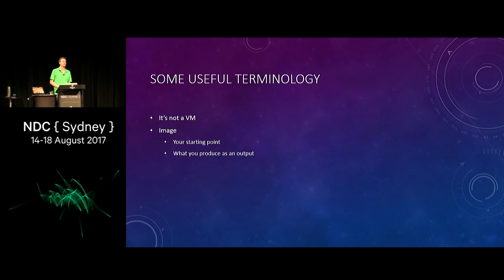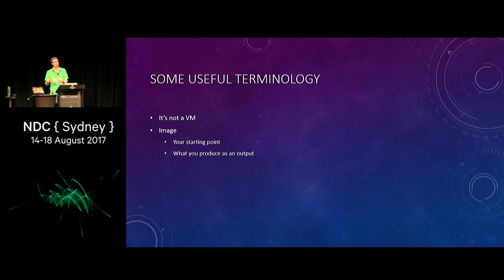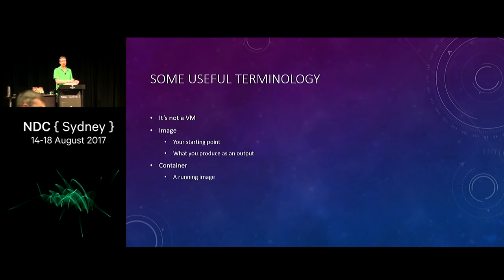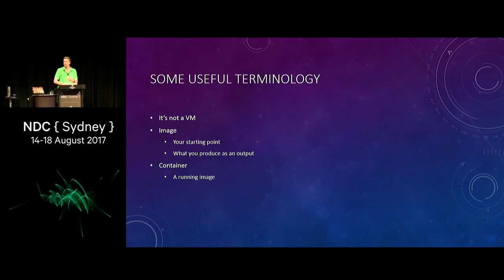The terminology I'm going to use a lot is the idea of an image. An image is your starting point when building something from Docker — it's used to baseline a bunch of reproducible output. Thinking about it from a developer context, from an OO programming perspective, an image is a class definition. From that we have containers. A container is a running image — it's the implementation of a class, an object created from a class. Often times people confuse image and container and think the words are used interchangeably, but they're not — they're very different concepts.